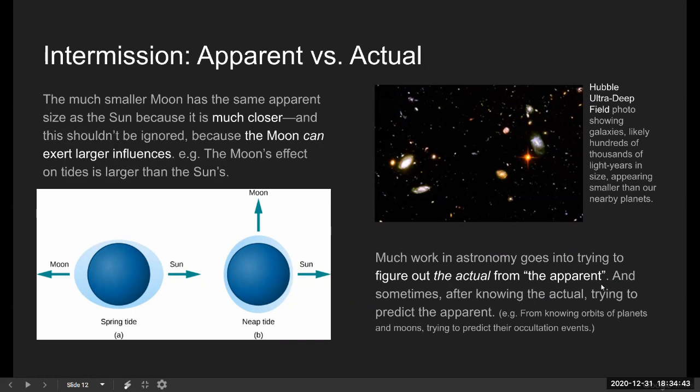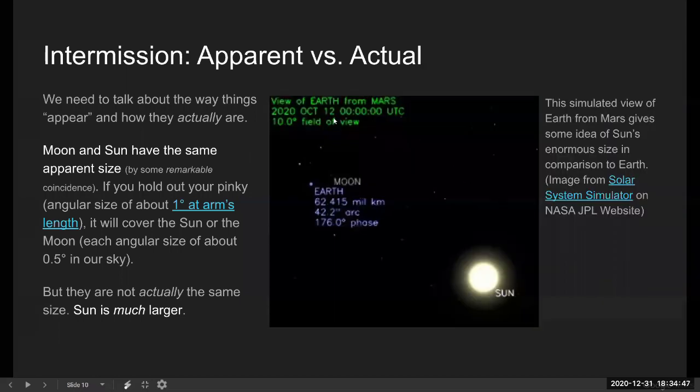And it's almost easier. So I show you a simulation here. When you know the actual, like actually what the size of Earth is, what the size of the sun is, actually where Mars is, then simulating something like this, it's relatively easy.